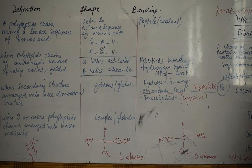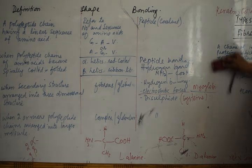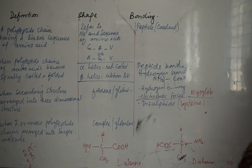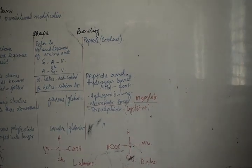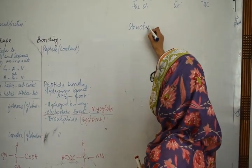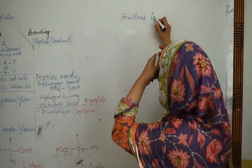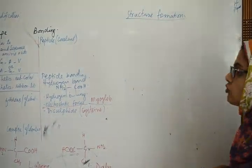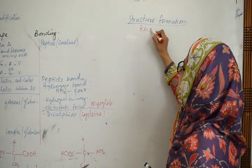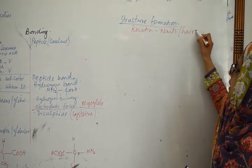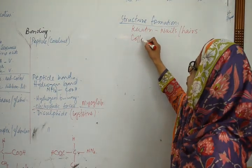The functions of proteins are different. The first function is structural formation or structural organization. Different structures are made from proteins — for example, nails and hair are made of keratin, and collagen makes up bones and cartilage.